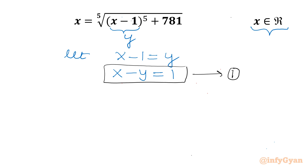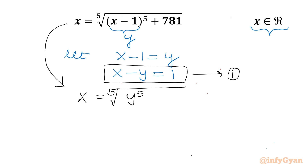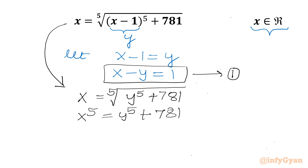Now from this substitution, the original equation becomes x equal to the fifth root of y power 5 plus 781. Raising both sides to power 5, x power 5 will be equal to y power 5 plus 781. Or we can write our second equation: x power 5 minus y power 5 equal to 781. This is equation number 2.